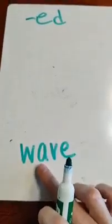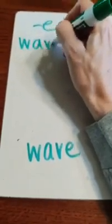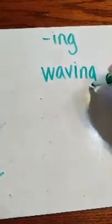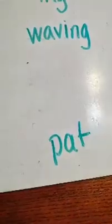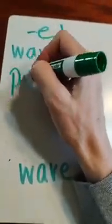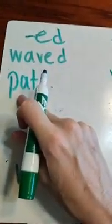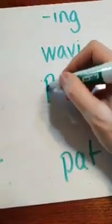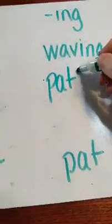And we do the same thing with E-D and I-N-G. E-D, I-N-G. So if we have wave, it's saying its name, so we just add the rest of the ending — waved. What do we do for I-N-G? We drop the E and add I-N-G. What about for pat? If we want to say pat-ed, is pat saying its name? No, it's saying its sound. So we know when it says its sound, we have to double that letter before we add our ending. Do we have to do that with I-N-G? Yes, we do — they're just the same.